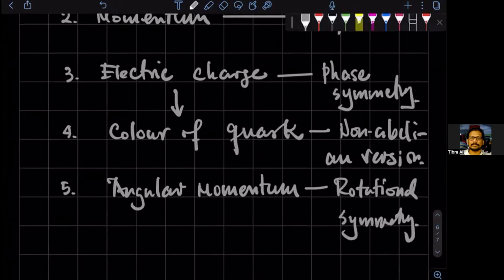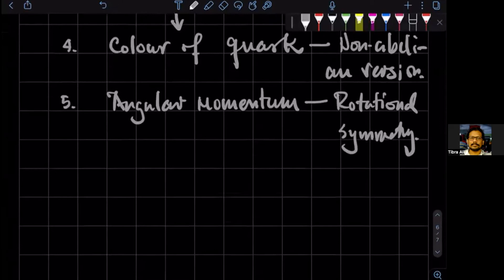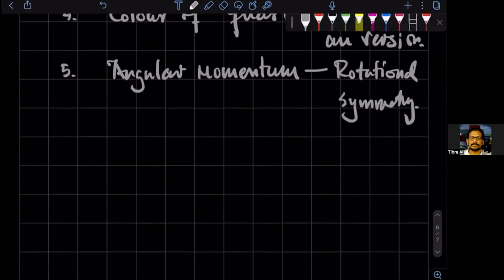Angular momentum is a consequence of rotational symmetry. Now, this is in classical field theory. In quantum field theory, we want to quantize these theories eventually.